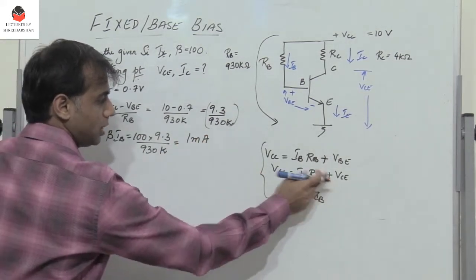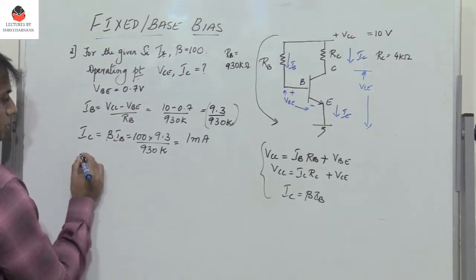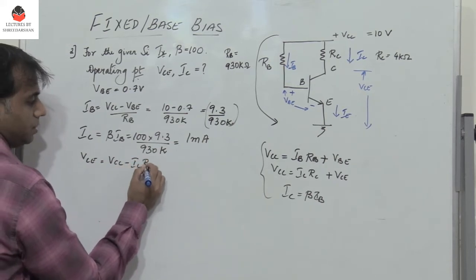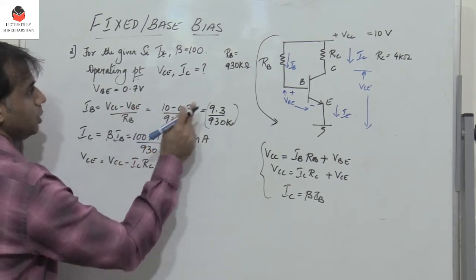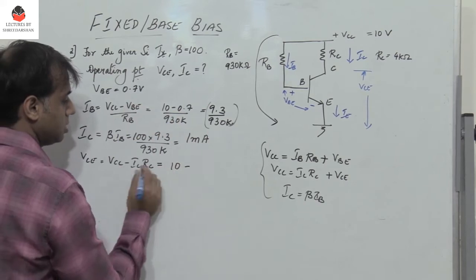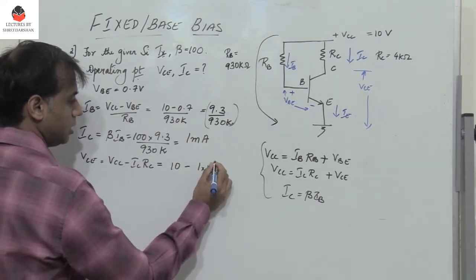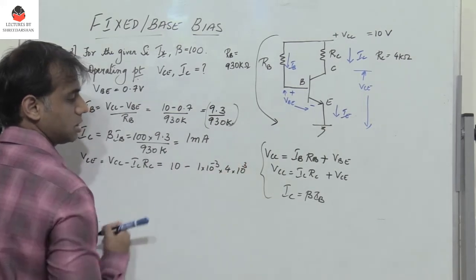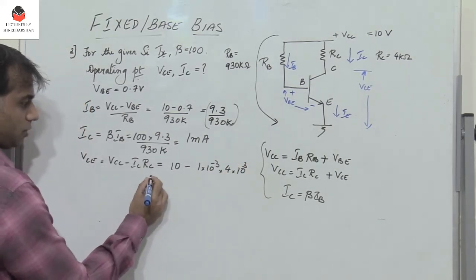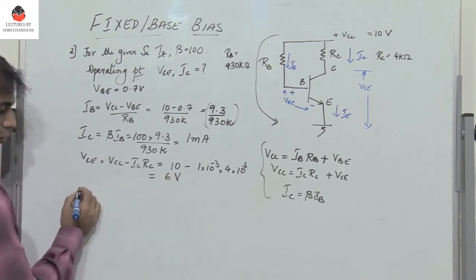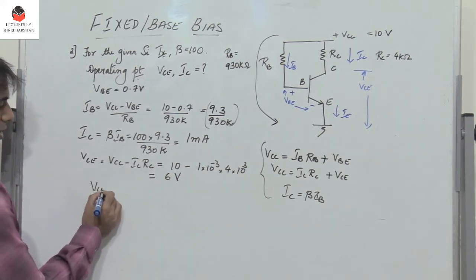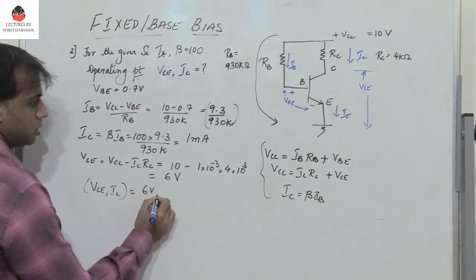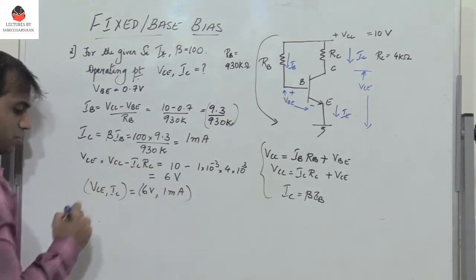Now finding VCE: VCE equals VCC minus IC times RC, which is 10 minus 1 milliampere times 4K ohm. That gives 10 minus 4, so VCE equals 6 volts. Therefore the operating point is VCE = 6 volts, IC = 1 milliampere. A very easy problem.